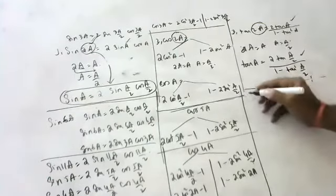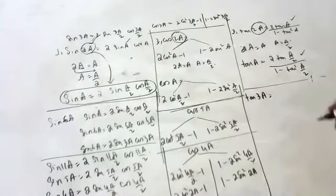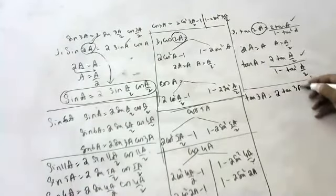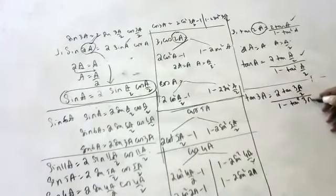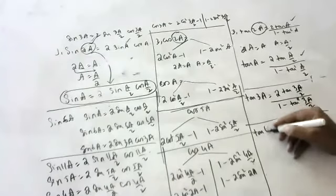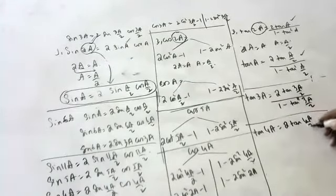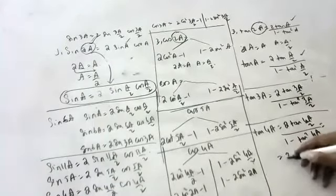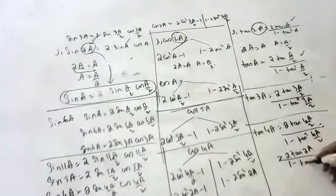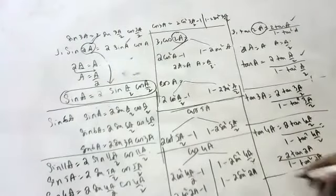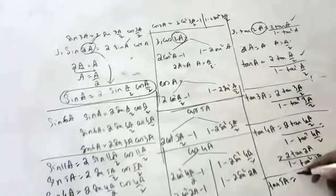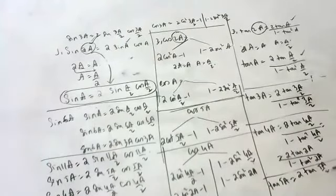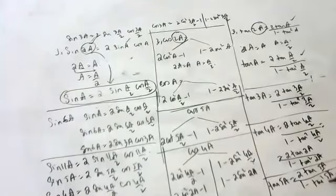Suppose I want tan 3a. What is the formula for tan 3a? 2 tan(3a/2) / (1 − tan²(3a/2)). Tan 4a: 2 tan 2a / (1 − tan²2a). Tan 5a: 2 tan(5a/2) / (1 − tan²(5a/2)). Like that you can write for any multiple.